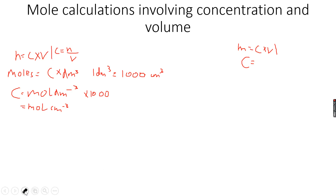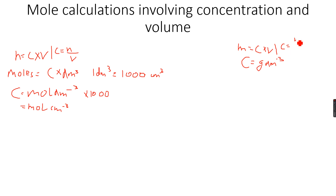In this case the concentration is given in gram per dm³. This is because instead of moles we have mass, so instead of mole per dm³ the concentration is in gram per dm³. We can see this because if we rearrange the equation, C is equal to M over V, which gives grams over dm³, so gram per dm³.